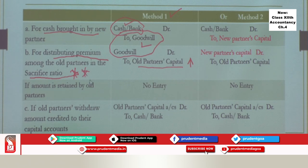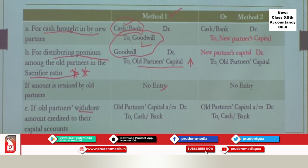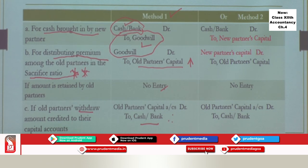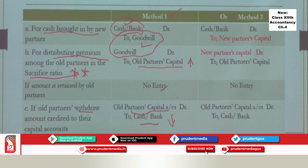There is also a second method. When the new partner brings cash towards goodwill, instead of crediting the goodwill account, it is directly credited to his capital account. When the goodwill is shared among old partners, the new partner's capital account is debited and old partners' capital accounts are credited in the sacrifice ratio. Everything else is the same as method one. You may follow method one or method two as per the instructions given in the question paper.